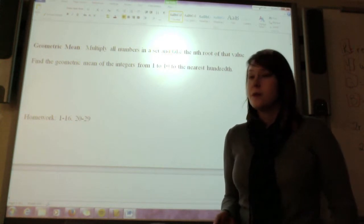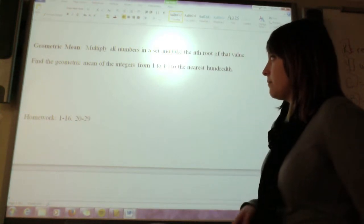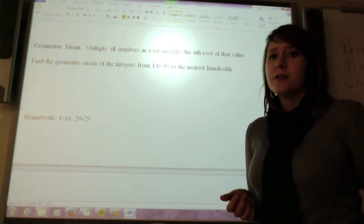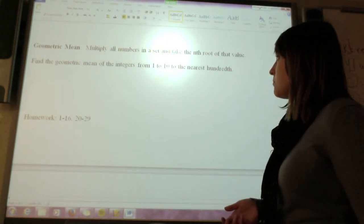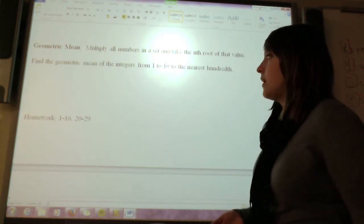Alright, so the next thing that we can do is called a geometric mean. Basically, in a geometric mean, all you do is you multiply all the numbers in a set and take the nth root of that value. So, for example, if I have five different numbers, I would take the fifth root.